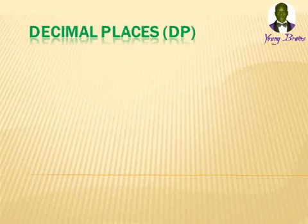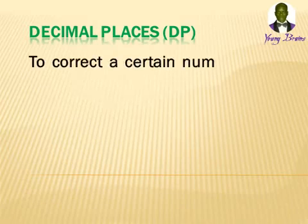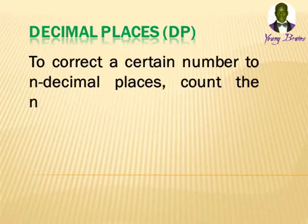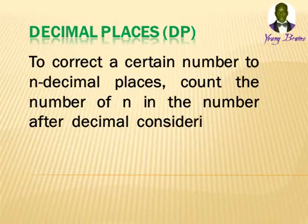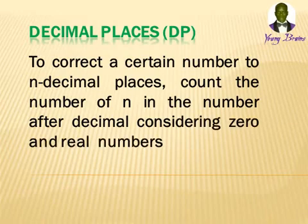Today we are taking the first type of approximation which is decimal places. To correct a certain number to n decimal places, we count n numbers after the decimal, considering zero and all other digits.